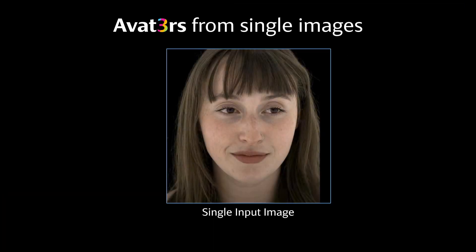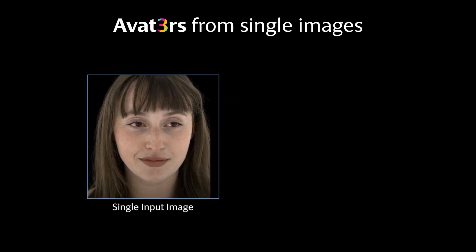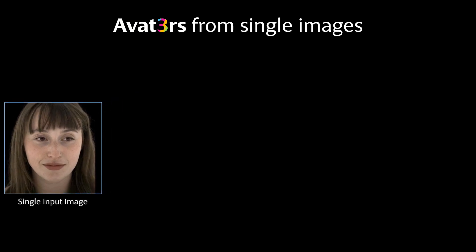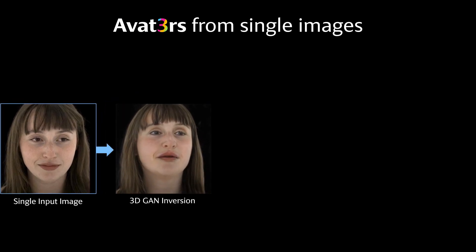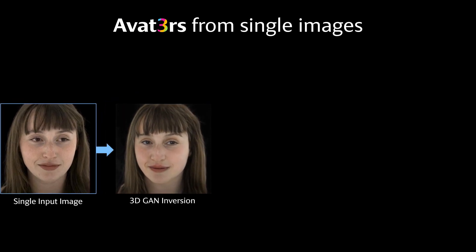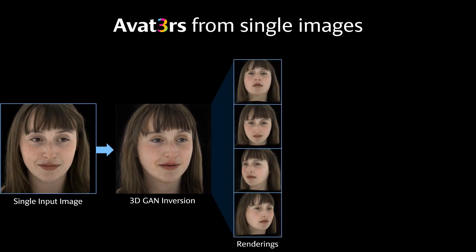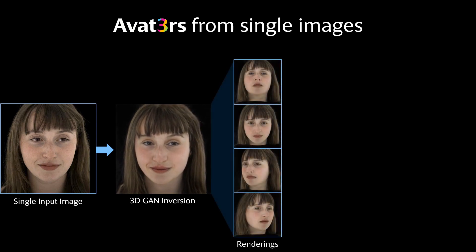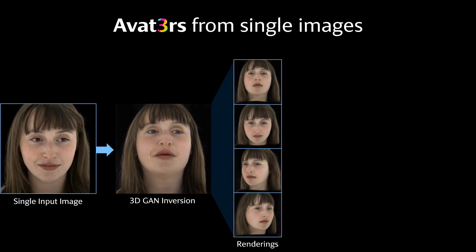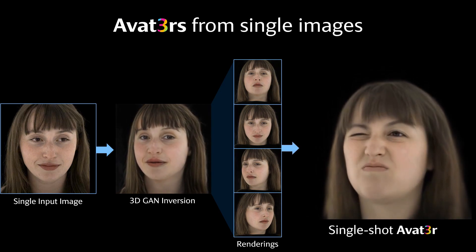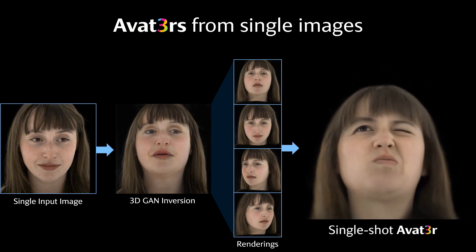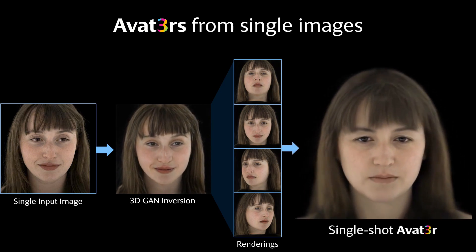While Avatar is designed for four input images, it can also work with a single image. To achieve this, we employ a pre-trained 3D GAN and perform 3D lifting on the single image. From the lifted 3D representation, we render the four input views required by our model. The resulting avatars can then be animated with a wide range of complex expressions.